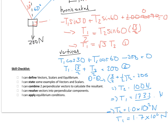To recap: from the initial section you should be able to define vectors, scalars, and equilibrium, and give examples. In the first example we combined two perpendicular vectors. In the second, we resolved vectors into horizontal and vertical components. In the third, we used the equilibrium condition — resultant force equals zero — to find unknown tensions in wires.